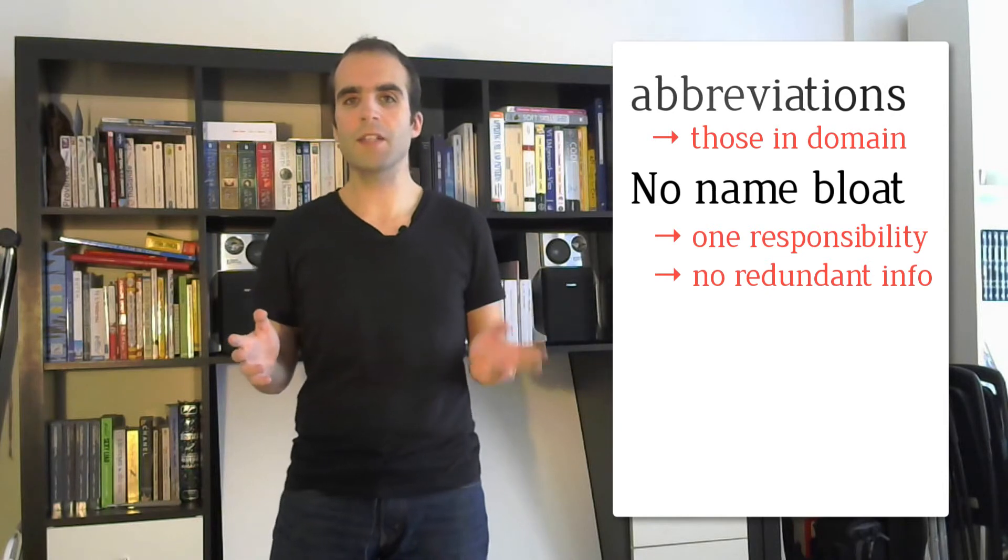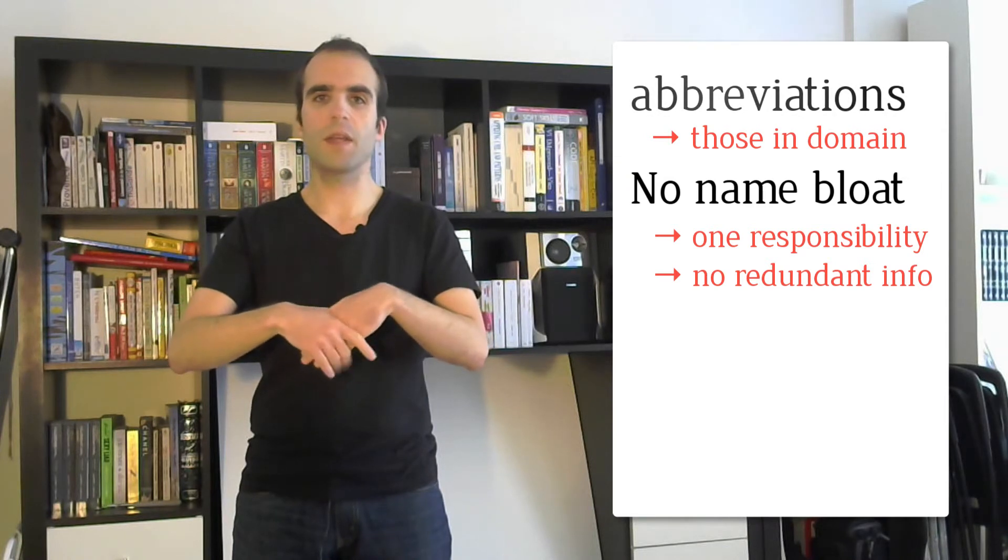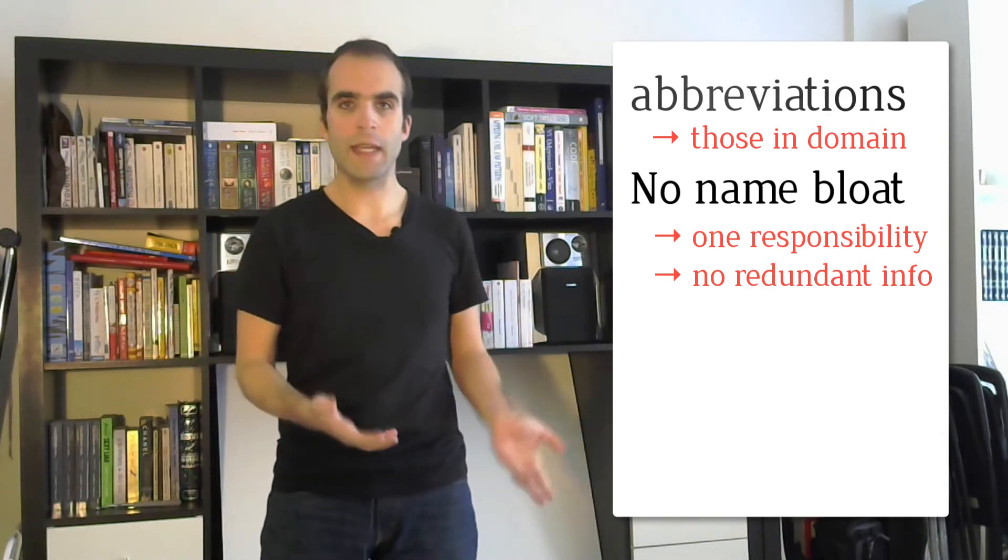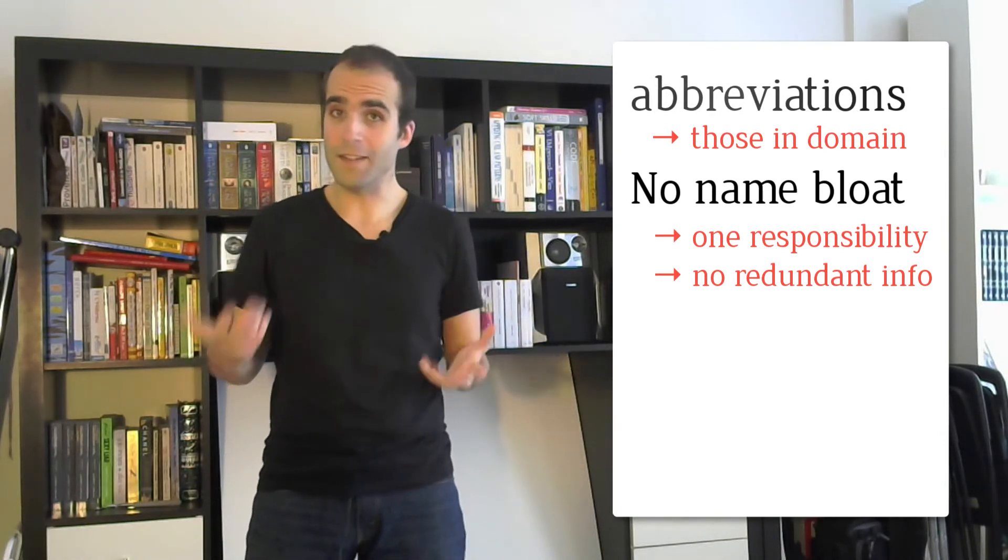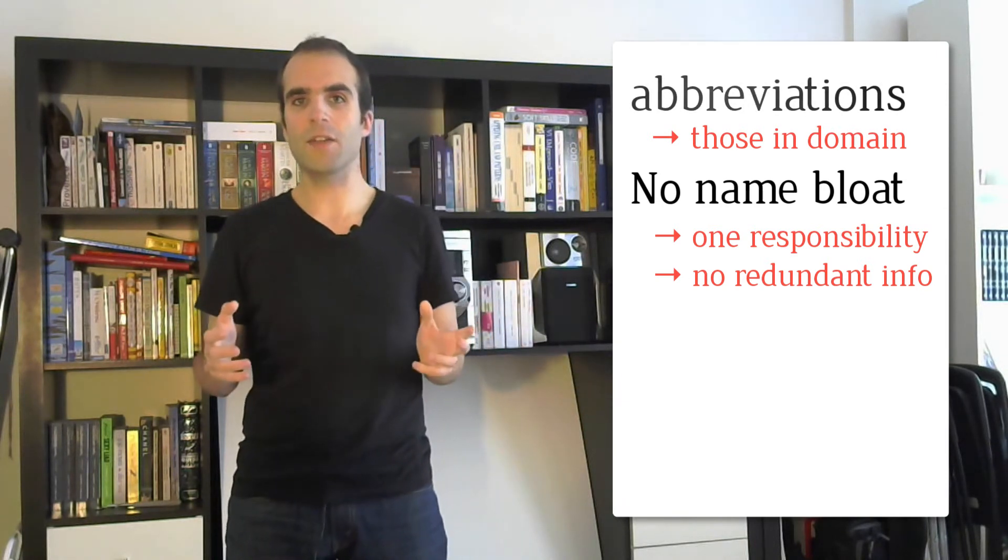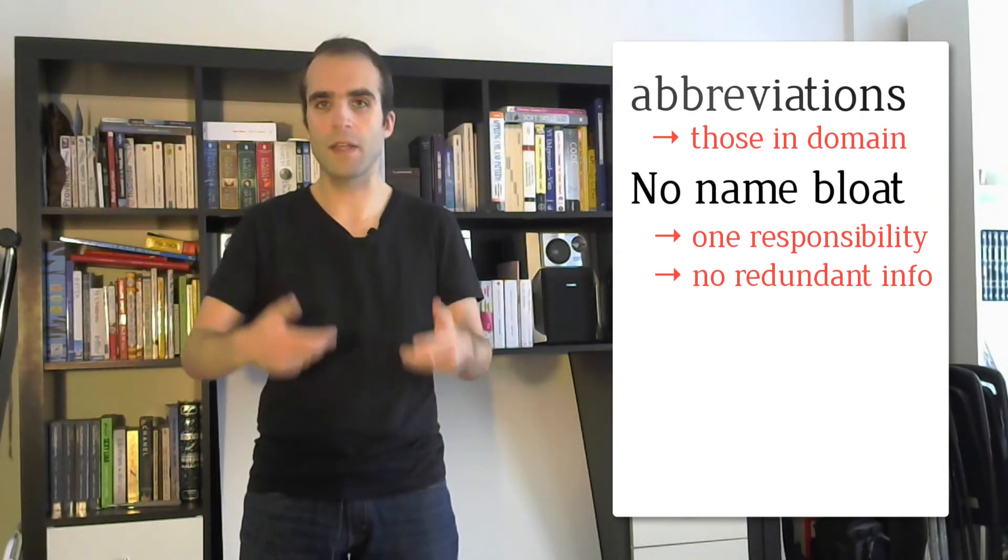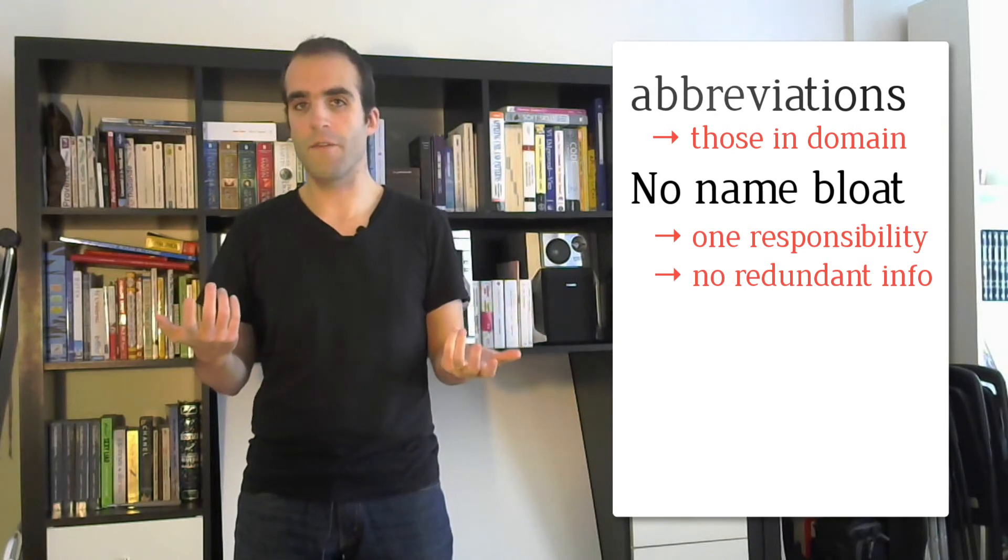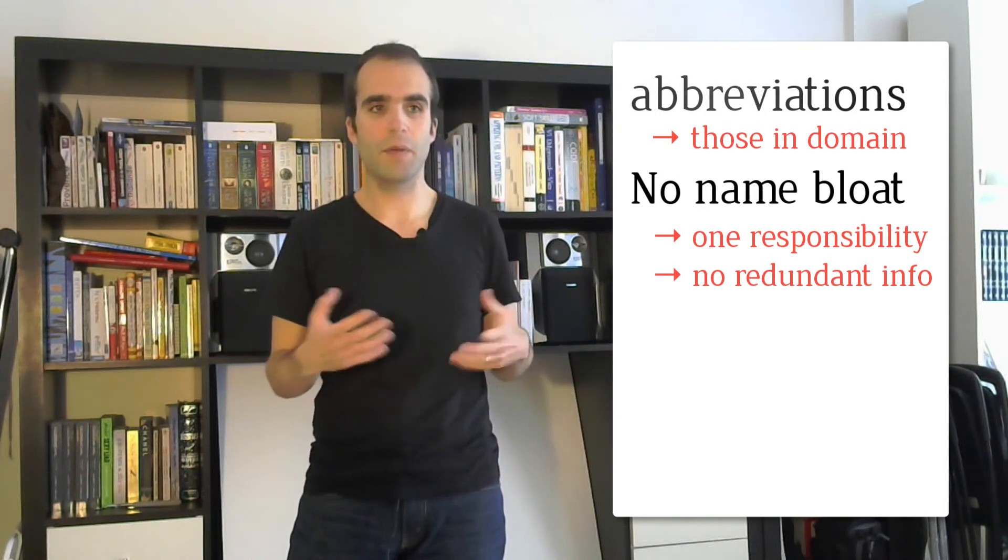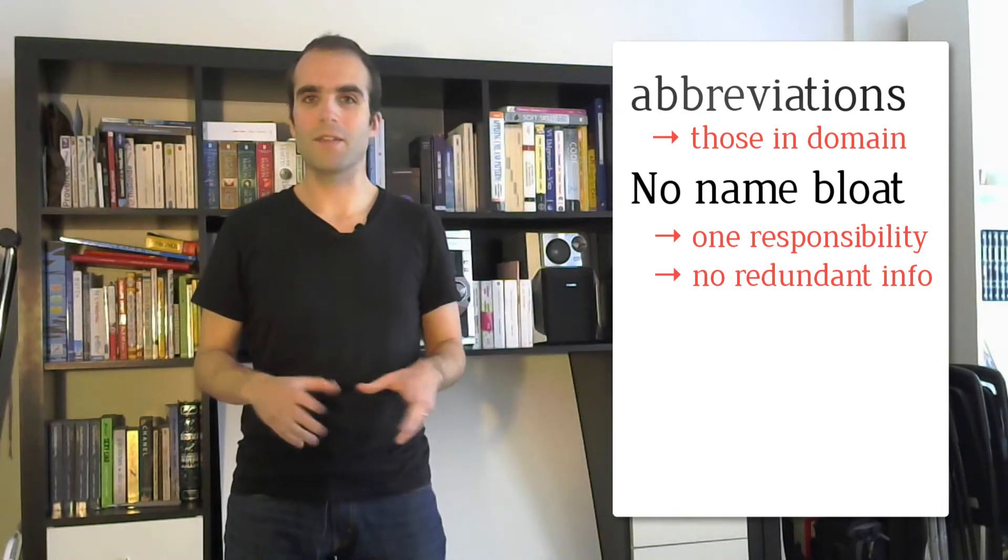For example, imagine a function that puts two strings together. That could be called concatenate. Concatenate is a good name, but concatenate strings makes sense because it's made for putting strings together, but it's not a good name because the information that it's operating on strings is already in the prototype and in the string we're passing at a call site. Let's just call it concatenate and not concatenate strings. Putting redundant information on types in a function name is just bloat.